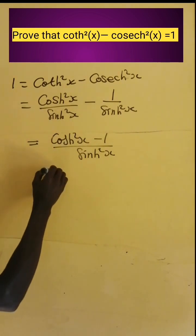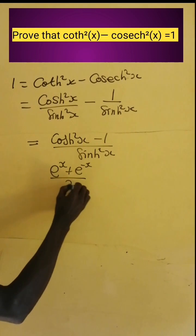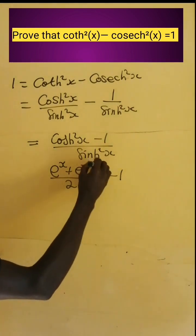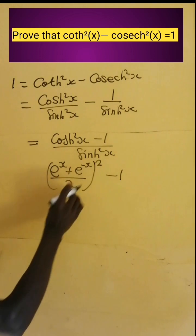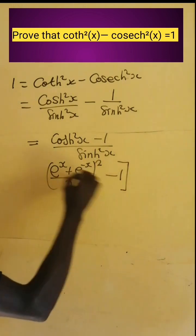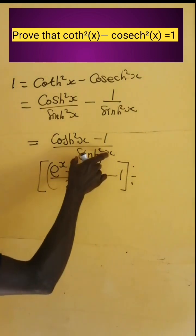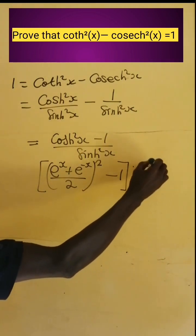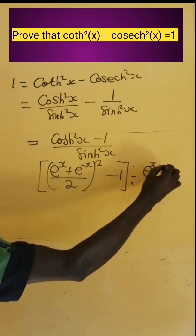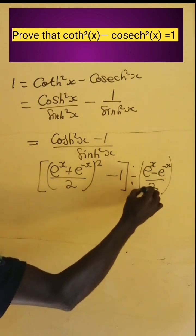Now, hyperbolic cosine of x is defined as e to the power x plus e to the power negative x, divided by 2. So we square it and subtract 1 from it. Then we divide all of this expression by hyperbolic sine of x, which is e to the power x minus e to the power negative x, all divided by 2, and then we square it.